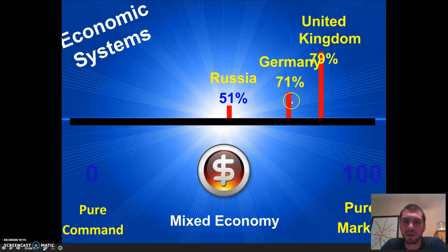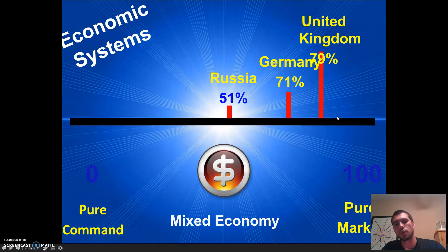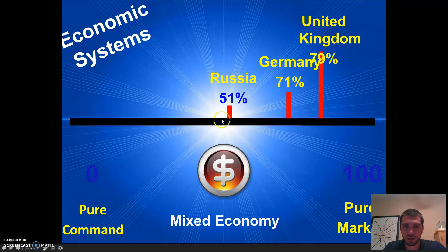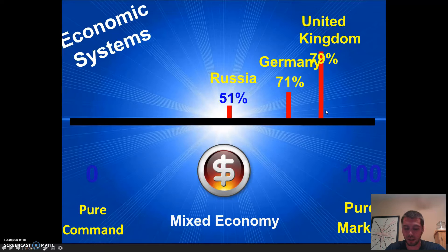Germany is closer to market at 71%, and the United Kingdom is also mostly market at 79%. Both of these are what we call mixed market. Technically Russia is too because it's at 51%, but Germany and the UK are way more market economy than Russia — a lot less government control. You need to mark on that big long line on your paper: put 50% right in the middle, Russia at 51%, Germany at 71%, and the United Kingdom at 79%.